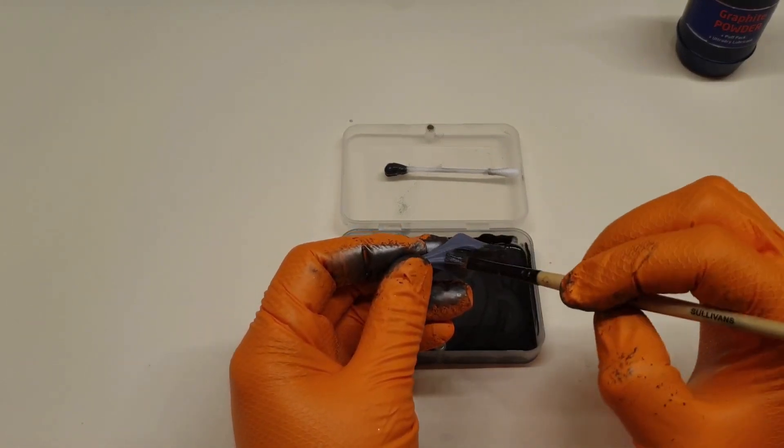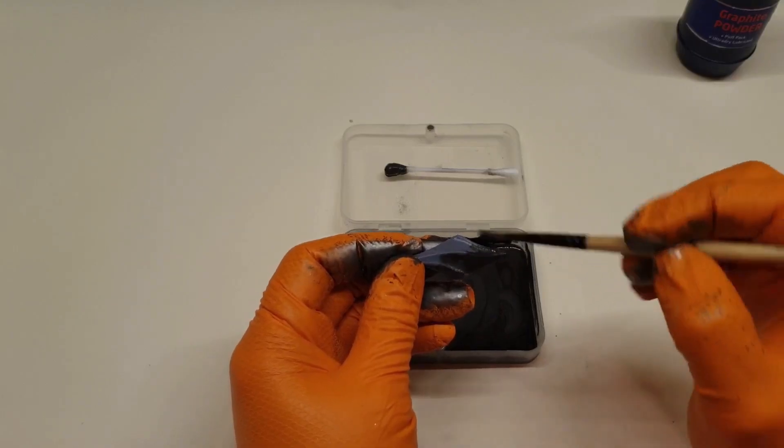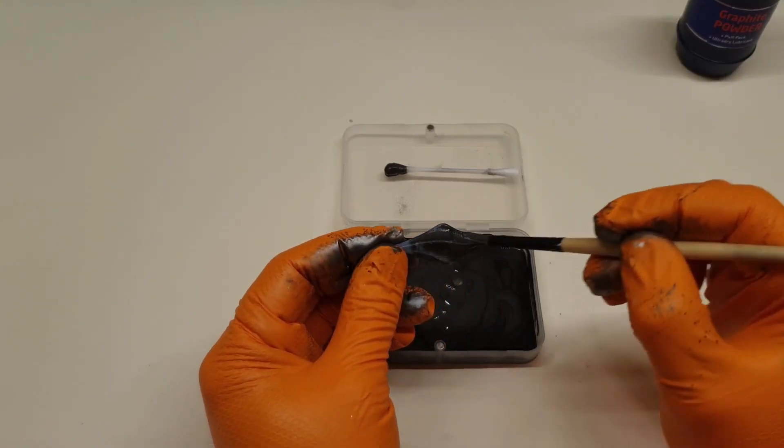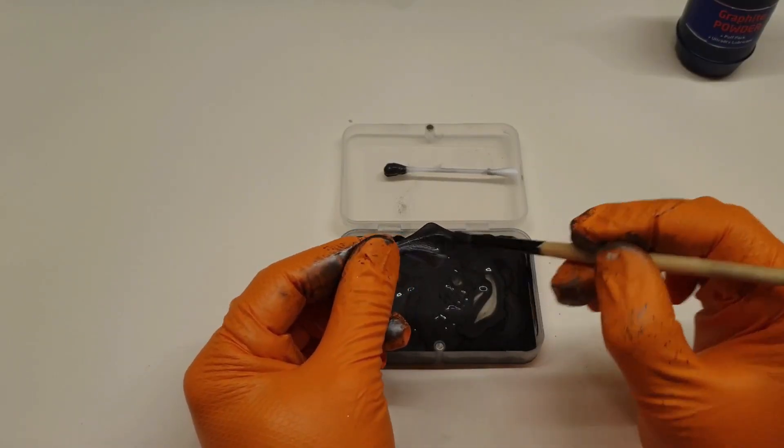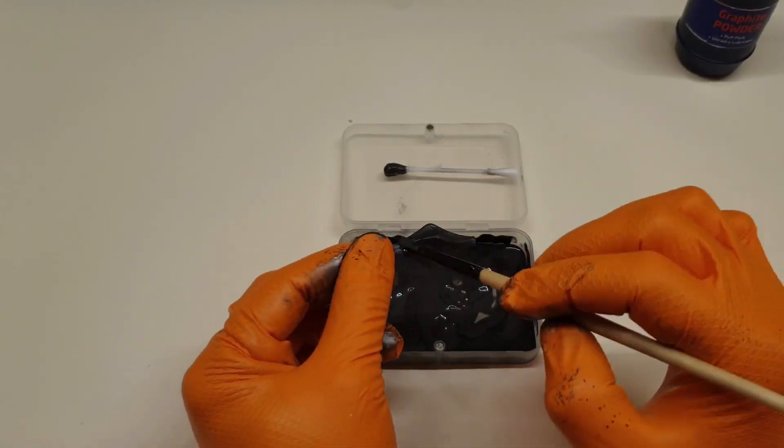Once you've got the mixture right, you just simply paint it on. Try and apply a smooth, light coat of the graphite paste. It fills small gaps and filament lines quite easily, but don't put it on too thick, as it tends to crack off the part when it dries.